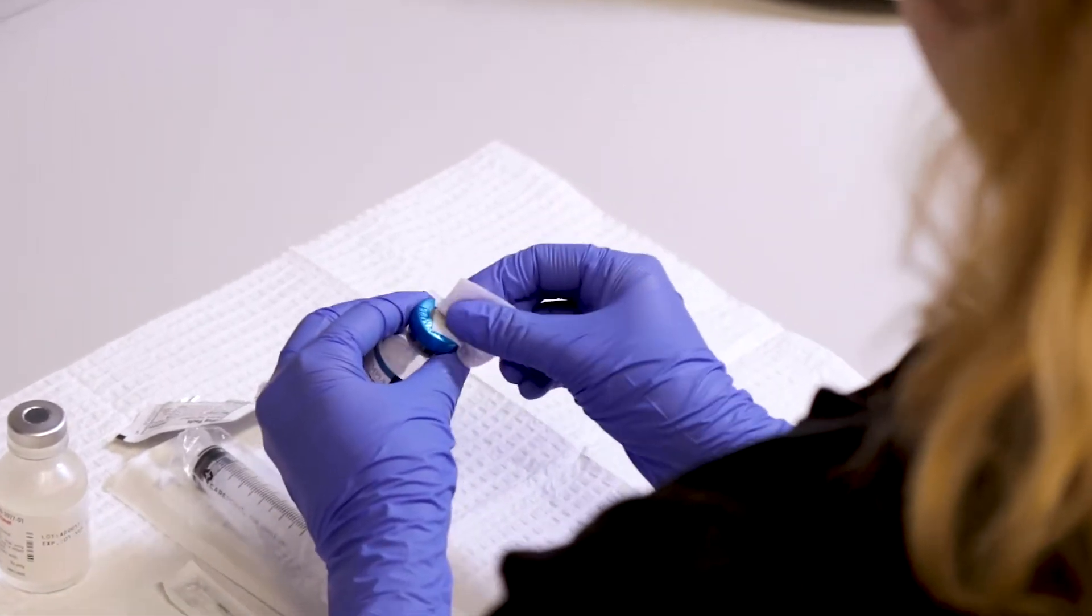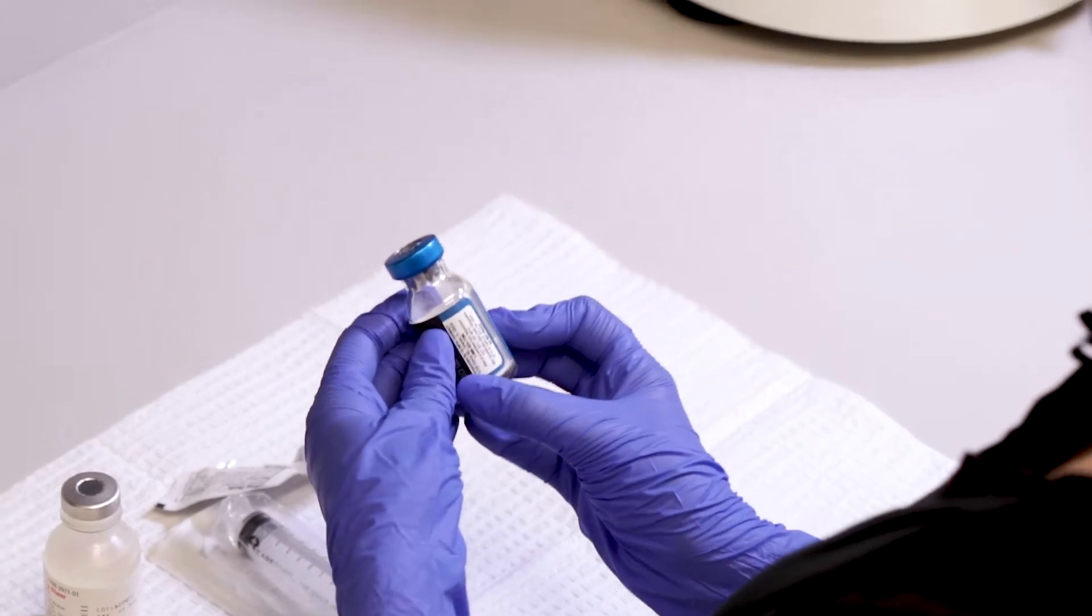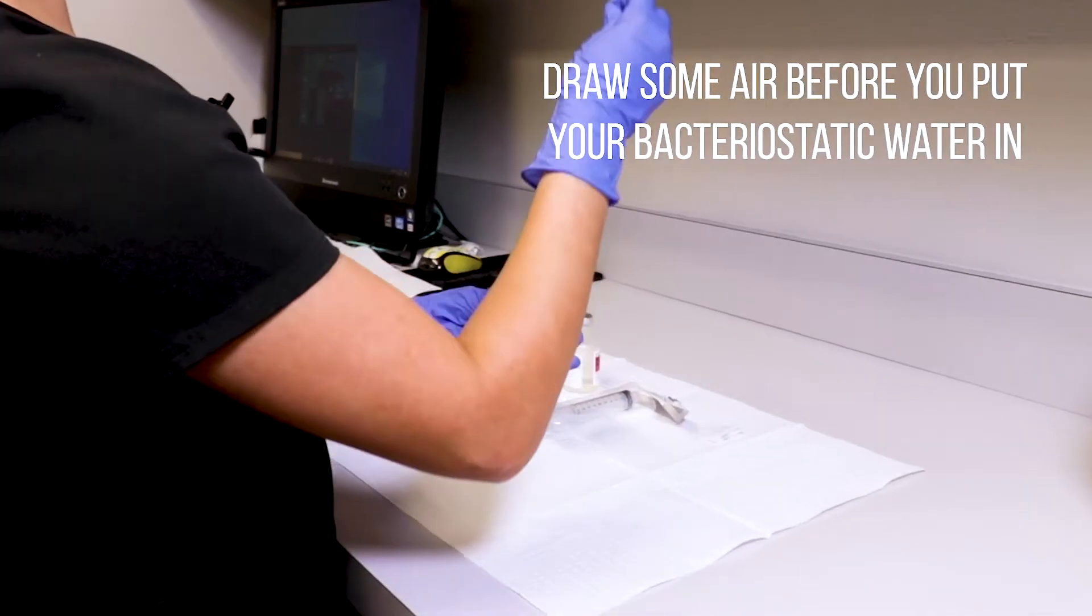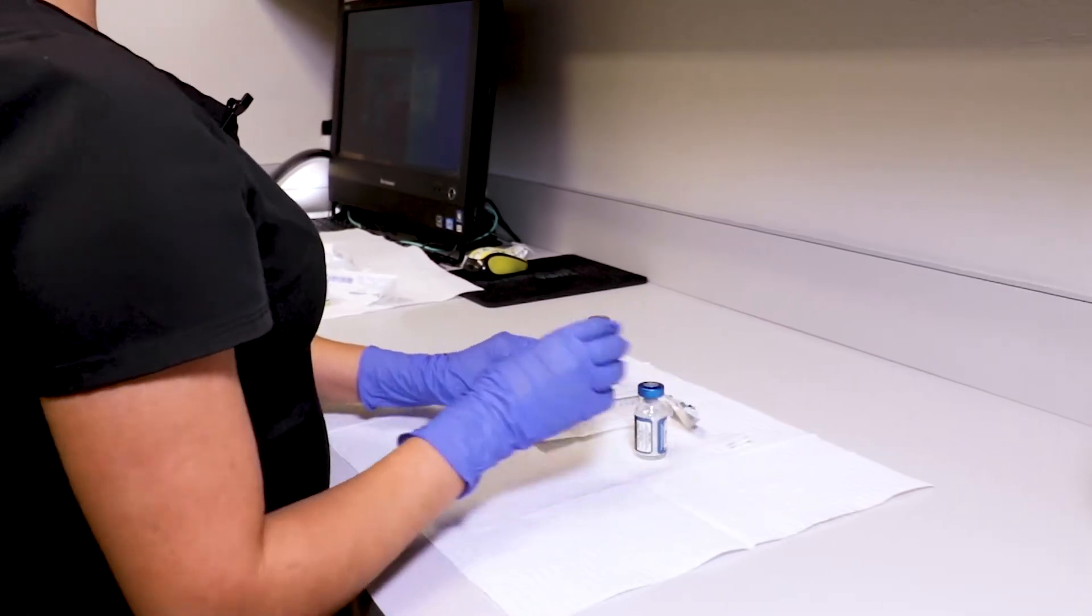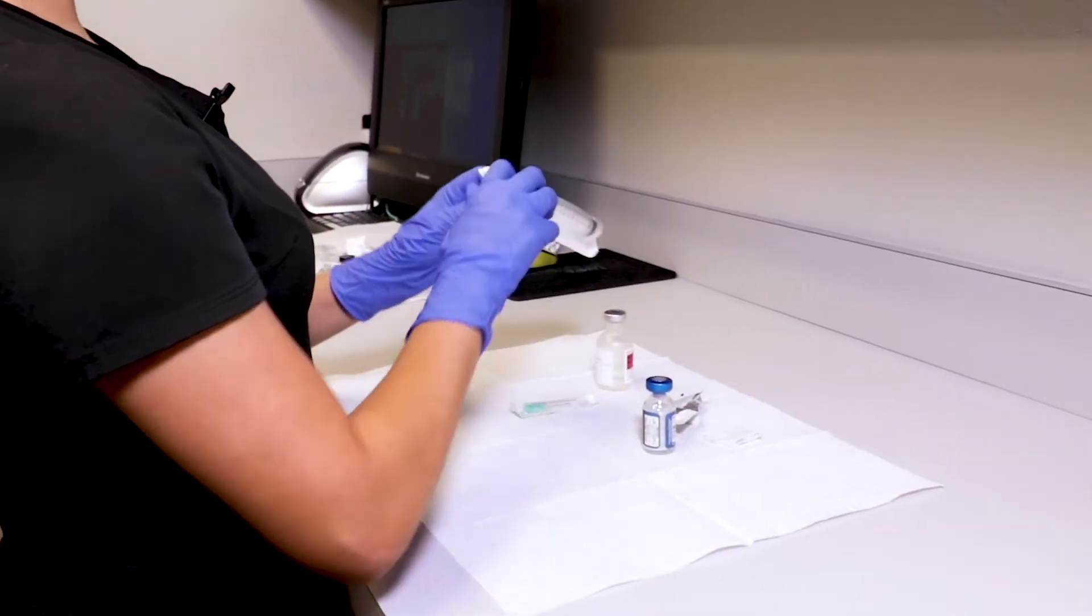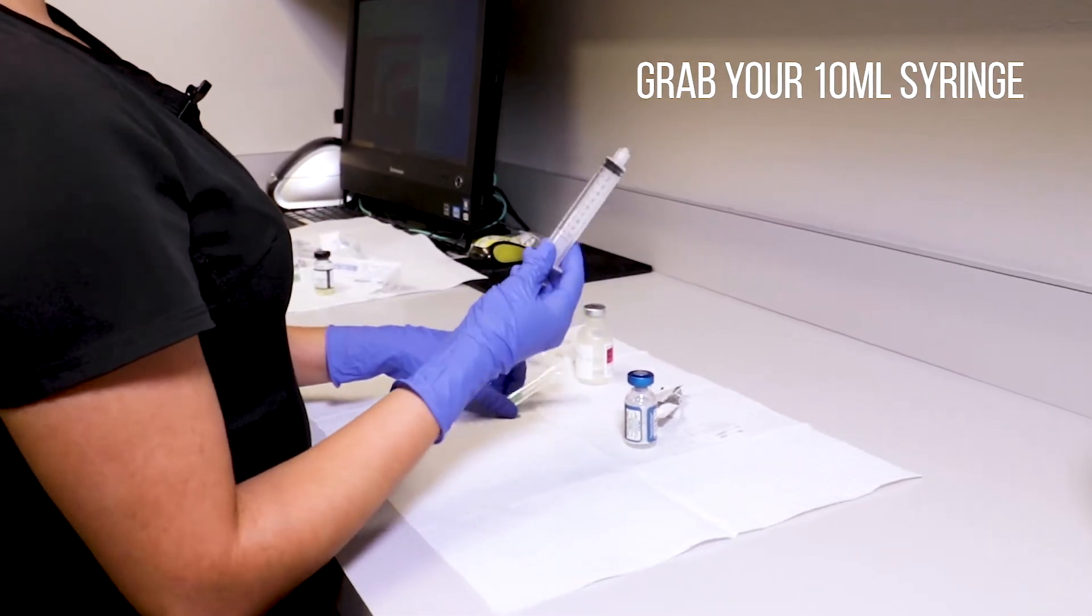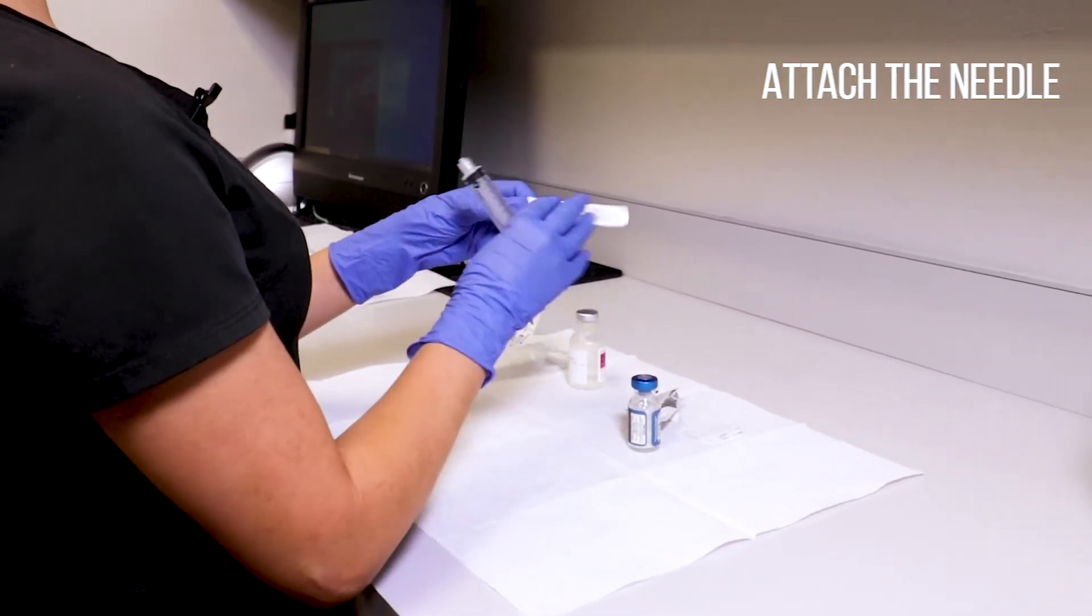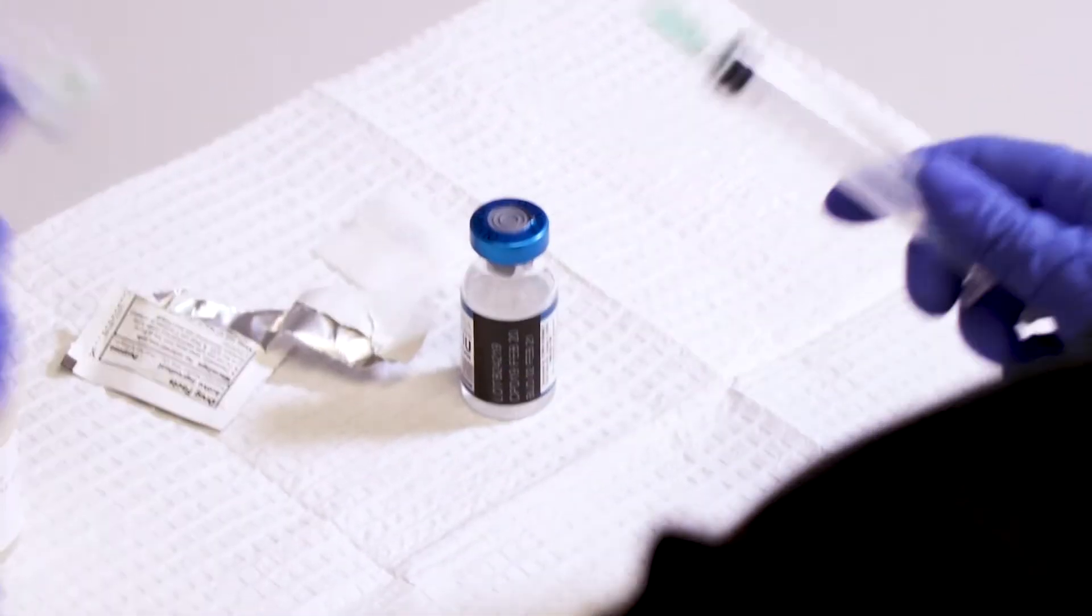These vials often have a lot of pressure so you always want to draw off some air before you put your bacteriostatic water in. You're going to grab your 10ml syringe and attach the needle.